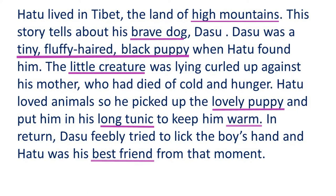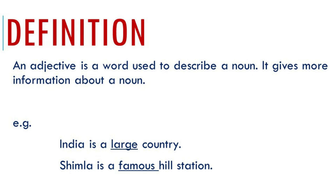Let us have a look at the definition of adjectives. An adjective is a word used to describe a noun. It gives more information about a noun. For example, India is a large country — the adjective 'large' describes the size of the country. Shimla is a famous hill station — the adjective 'famous' describes the popularity of Shimla as a hill station.